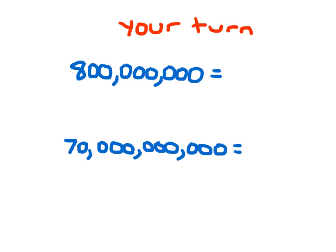Okay, it's your turn. That first number is 800,000,000 — rewrite it as a product with a power of 10 as a multiplication problem. And that second one is 70,000,000 — rewrite that as well. Press pause.